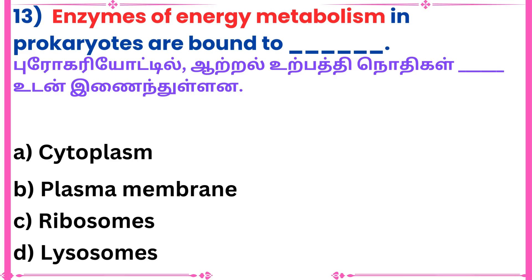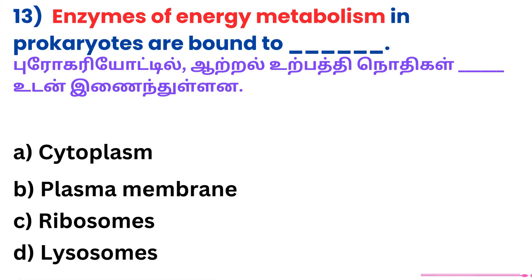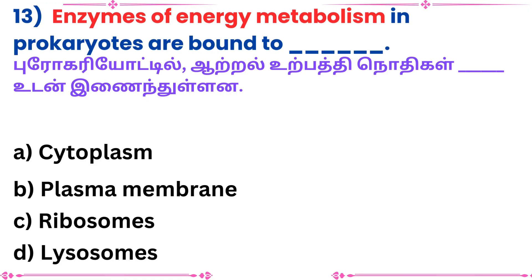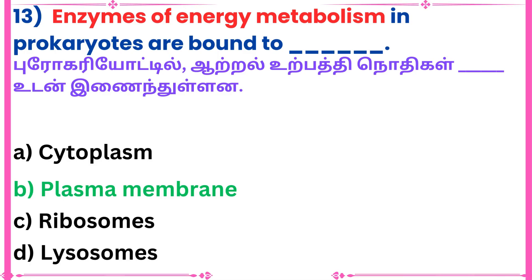Thirteenth question: Enzymes of energy metabolism in prokaryotes are bound to dash. Answer: Plasma membrane.